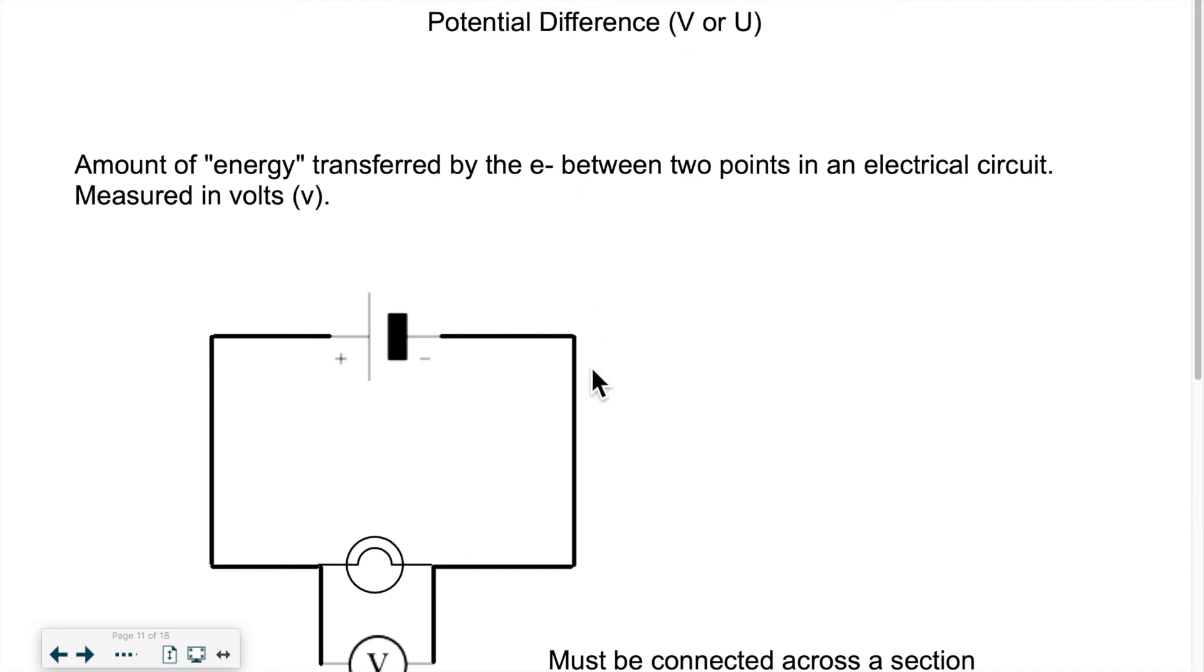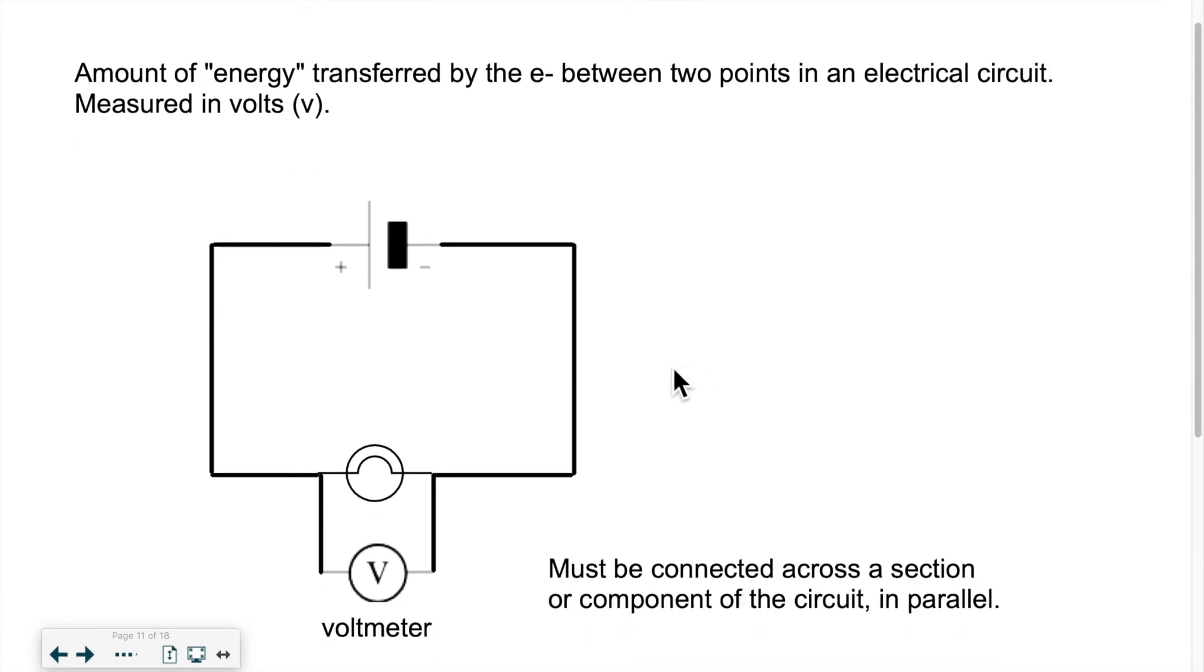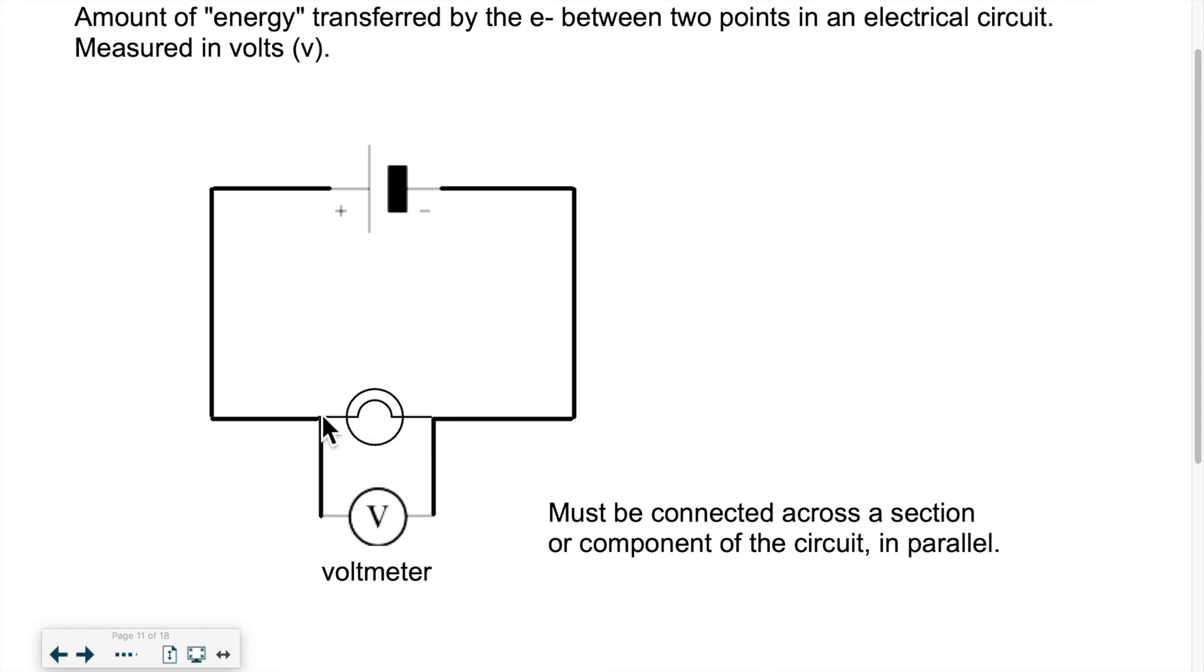That represents the amount of energy that the electrons will spend in various areas of the circuit. To know how much they spend, we need to know how much they had before and how much they have after in terms of energy.